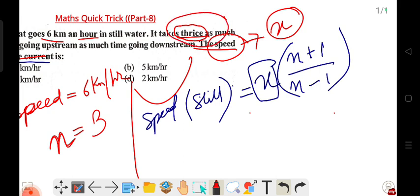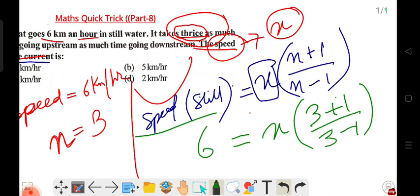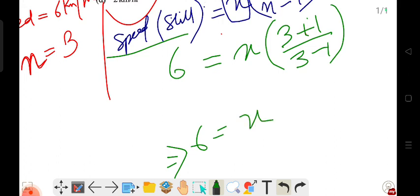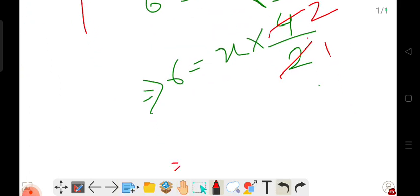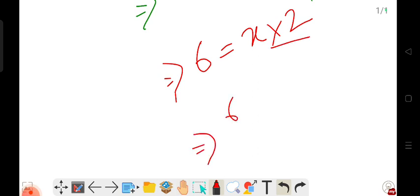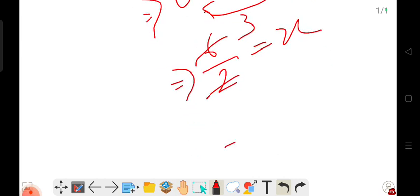Since n is twice or 2, the formula becomes: 6 equals x times (3+1)/(3-1), where n=3. This gives 6 equals x times 4/2, which simplifies to 6 equals 2x. Dividing both sides by 2, we get x equals 3.